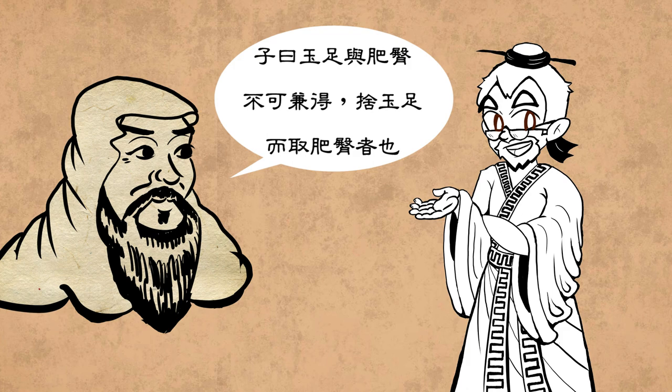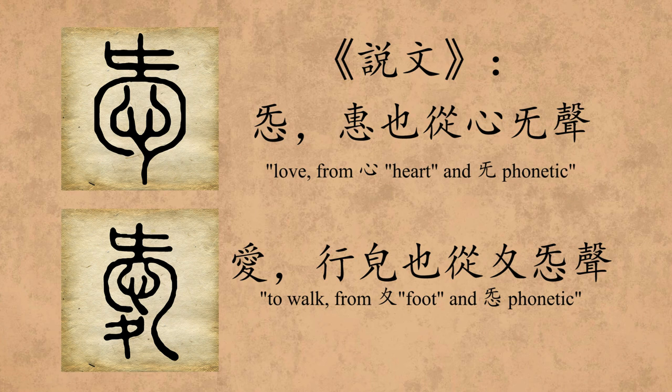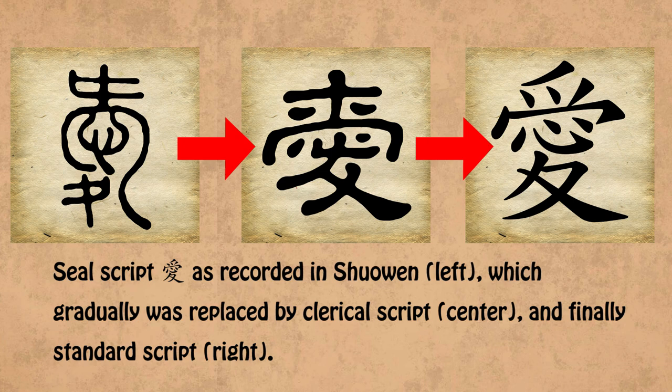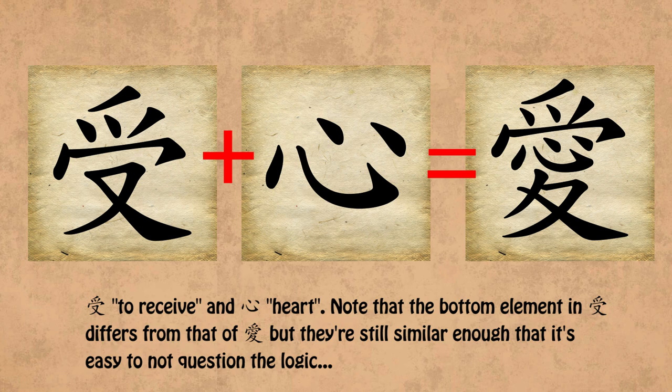Mr. Xu made a valiant attempt to end the madness, which is why Shuowen Jiezi lists the original character as the correct one, and glosses the modern character as meaning 'to walk.' Funnily enough, Ai is not listed as having to do with walking anywhere else, at least that I could find, so either this was an obscure Han Dynasty reading lost to time, or Mr. Xu was so desperate to cover up for this foot fetish nonsense that he just made a meaning up on his own. The now standard character turned out to be a bit cumbersome to write in the clerical style, however.